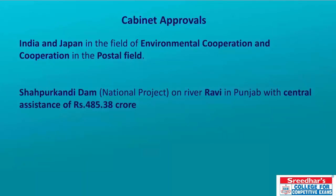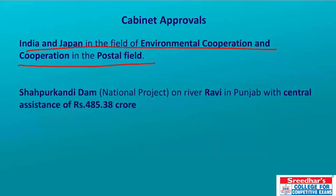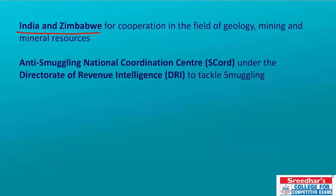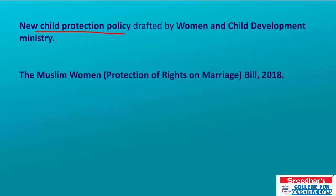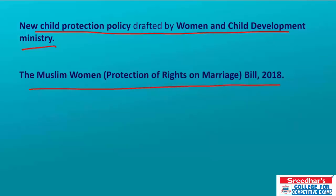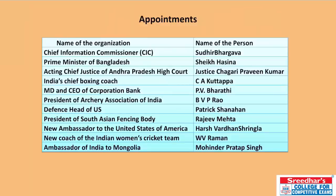Among December cabinet approvals: India and Japan signed an MoU in environmental cooperation and postal cooperation; the Shahpur Kandi Dam on River Ravi in Punjab was approved with central assistance of ₹485.38 crore; India–Zimbabwe MoU in geology, mining and mineral resources was approved; the Anti-Smuggling National Coordination Center and Directorate of Revenue Intelligence to tackle smuggling were approved; the new Child Protection Policy and Muslim Women Protection Bill 2018 were also approved.